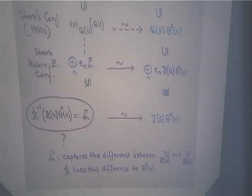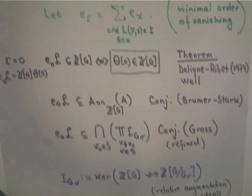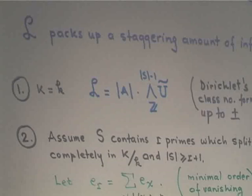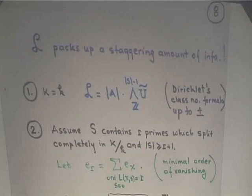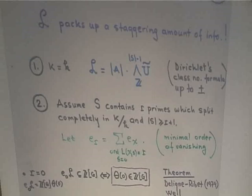The point I want to make is that this lattice L, even if you split it up into eigenspaces and look at pieces of it, packs up a staggering amount of mathematics. Most of the fundamental theorems in number theory are in fact encoded in this lattice. For example, in the simplest case where K = k (Galois group is the trivial group), Dirichlet's class number formula — up to a sign — is equivalent to saying that the lattice is nothing else but |A| times the top exterior power over Z of U (modulo torsion).